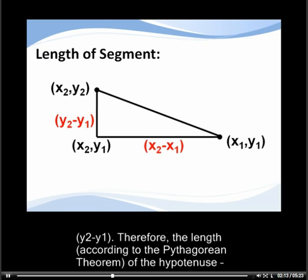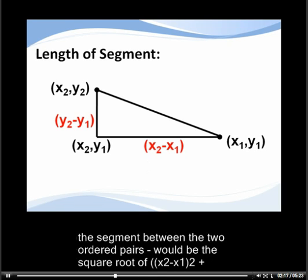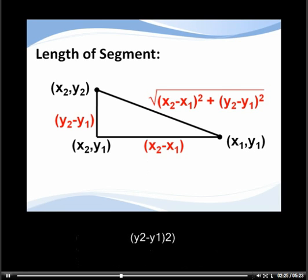Therefore, the length, according to the Pythagorean theorem of the hypotenuse, the segment between the two ordered pairs, would be the square root of (x2 - x1) quantity squared plus (y2 - y1) quantity squared.